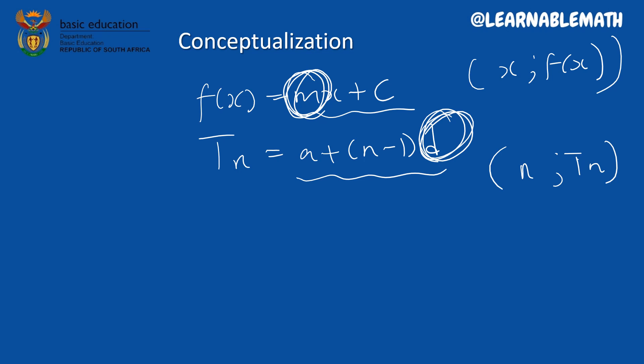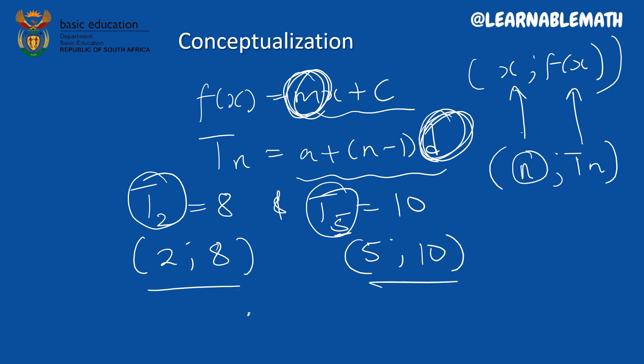What you can basically do, just like our previous example, we had term number 2, which was 8, and term number 5, which was equals to 10. So you can go and identify and write this as points. Then n represents x, and tn will represent f of x. So in this case, term 2 equals to 8, your n is 2, and your t2, which is your tn in this case, is 8. Then on this one, your n is 5, and your tn is 10.